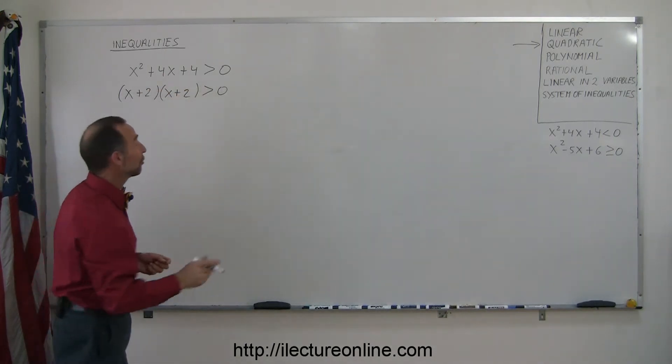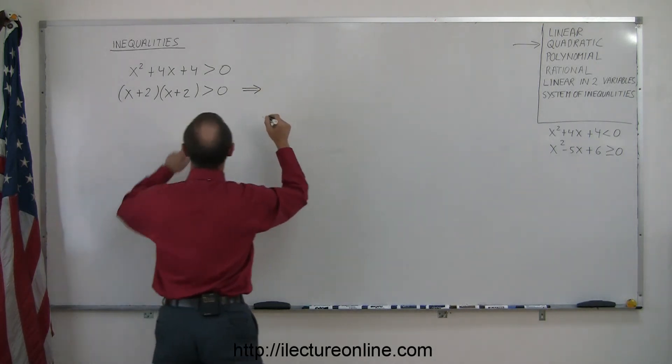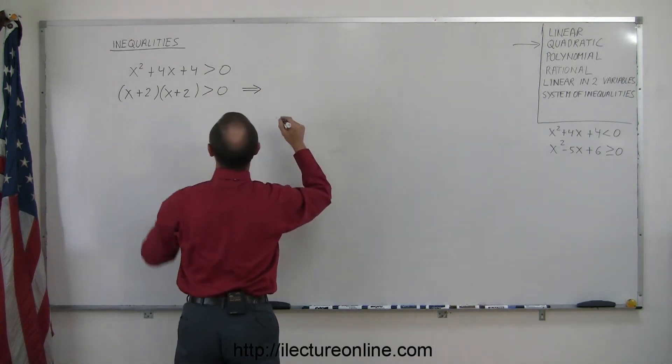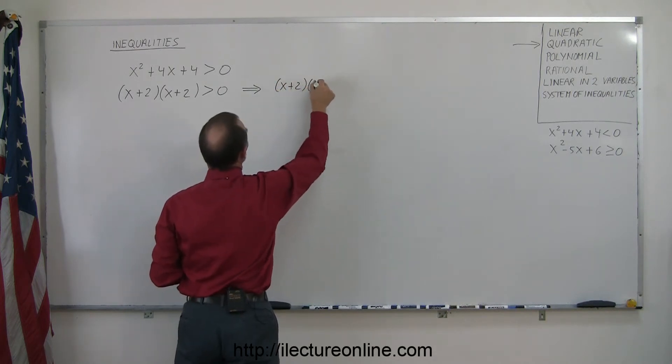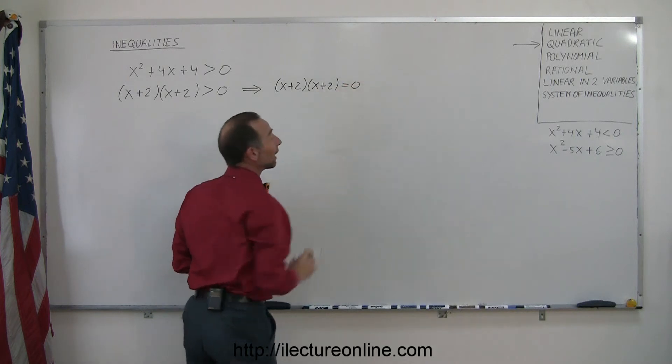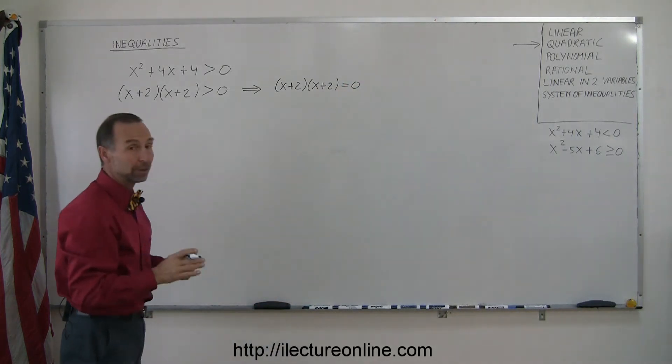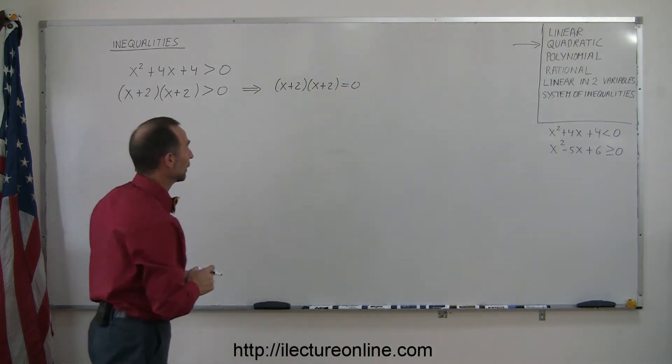Then the next step is to write the equivalent equation by changing the inequality sign to an equal sign, so we end up with (x+2) times (x+2) equals zero. When we do that and solve for that, we will get the critical points of our solution for our inequality.